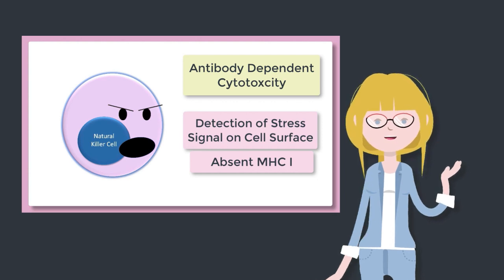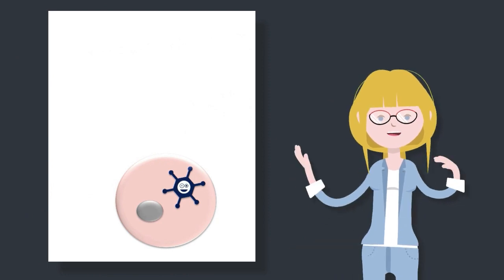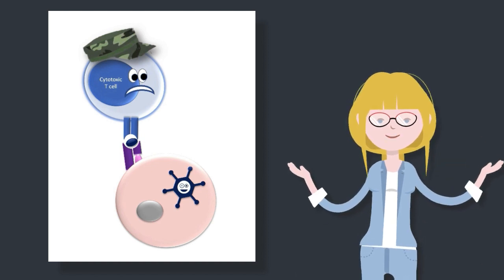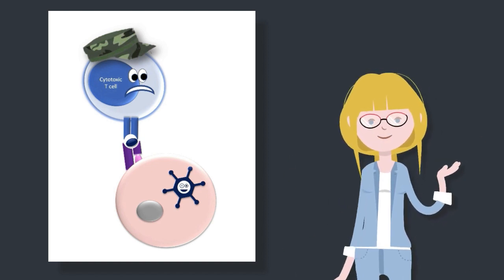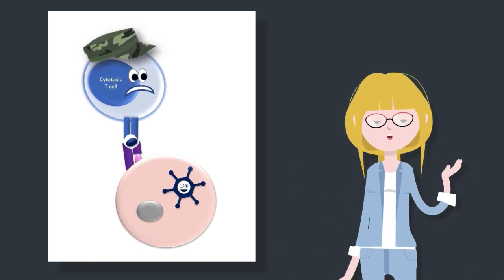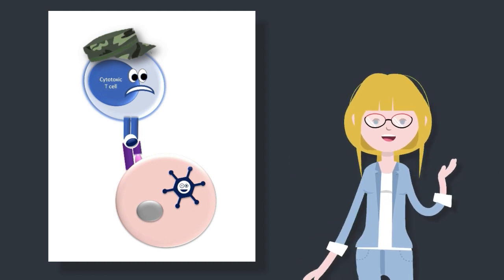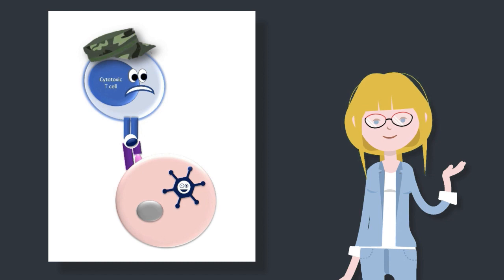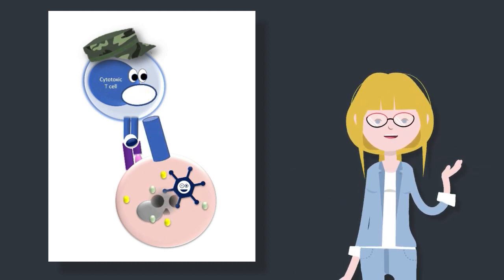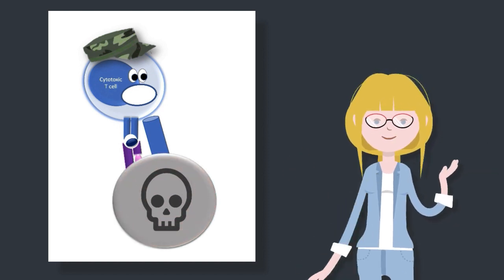A particular stress signal that gets NK cells fired up is the absence of MHC1 molecules, and this is a stark contrast from cytotoxic T cells. You may remember that cytotoxic T cells are looking for MHC1 molecules on the cell surface — in fact, they depend on it. That MHC1 molecule is holding out a very specific antigen which the T cell will react to. So CD8 T cells need to see the MHC1 and antigen together in order to go ahead and destroy that cell, and this is the typical immune response to intracellular pathogens such as viruses.